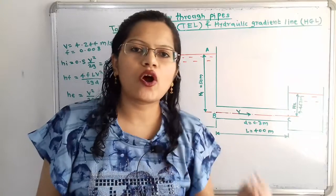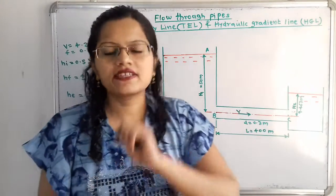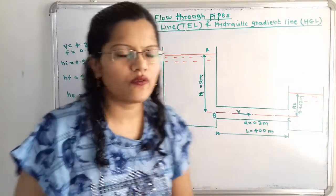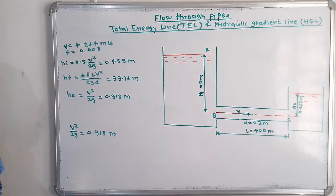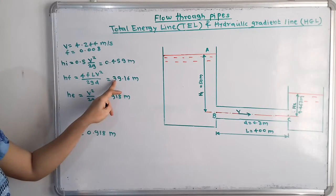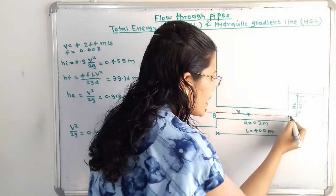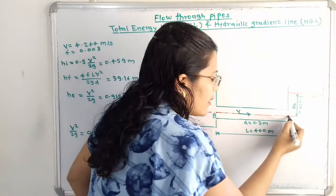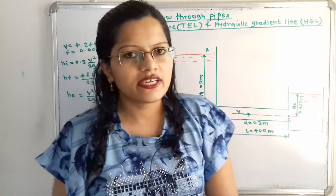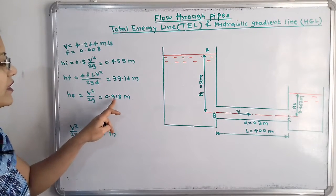As water flows through the pipe, there is also head loss due to friction, since the water is in contact with the pipe surface. From point B to point C, head is lost due to friction. HF is equal to 4fLV² / 2gD, where the coefficient of friction f is 0.008, giving HF equal to 13.16 meters. At the outlet at point C, the exit loss HE equals V² / 2g, which is 0.918 meters.